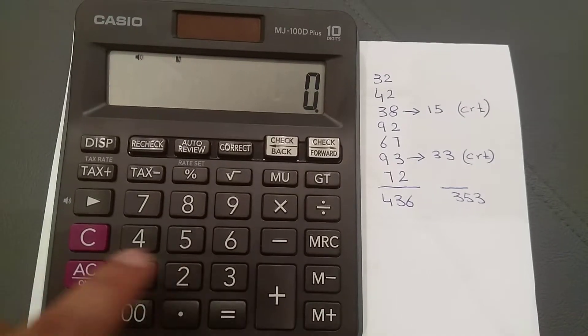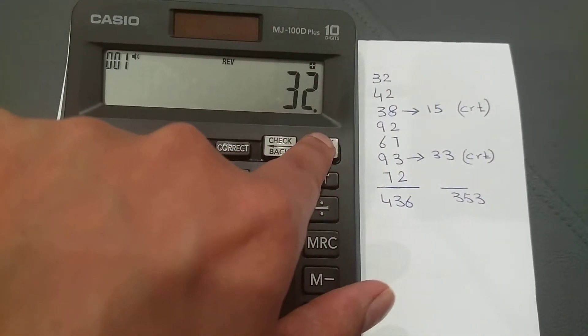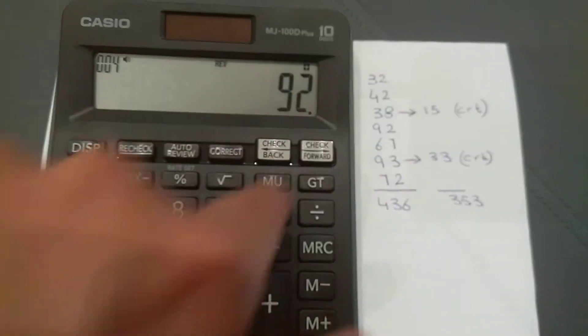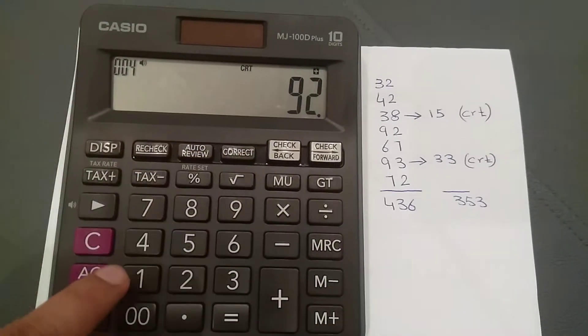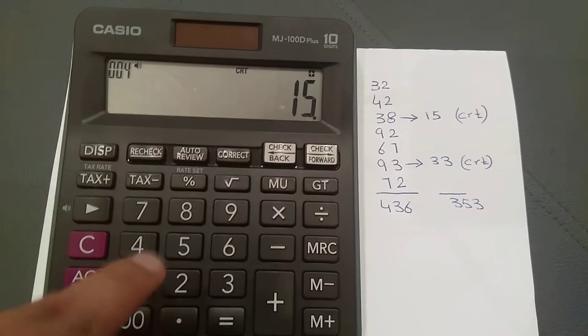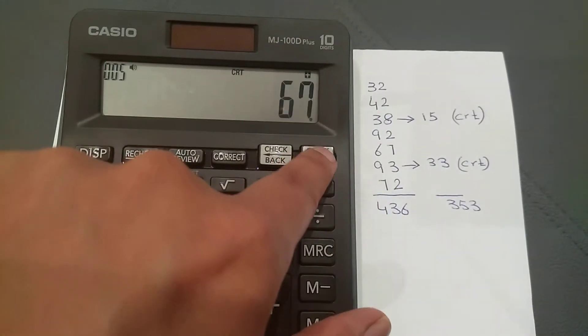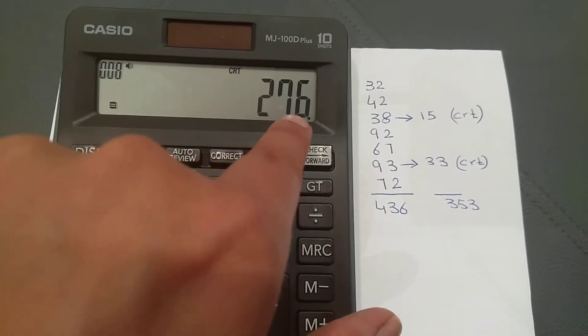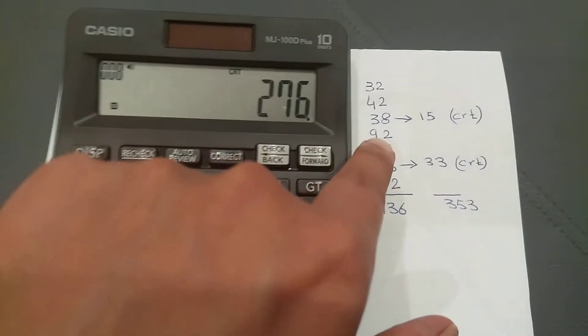Simply use the check forward button, and any value you want to change, for example this 92, I'll change it to 15 using the correct button. Then I move forward and continue, and 276 is the answer because I changed 92 to 15.